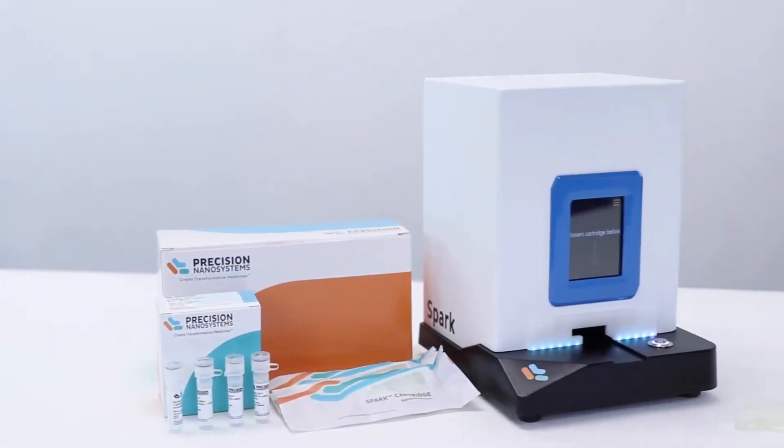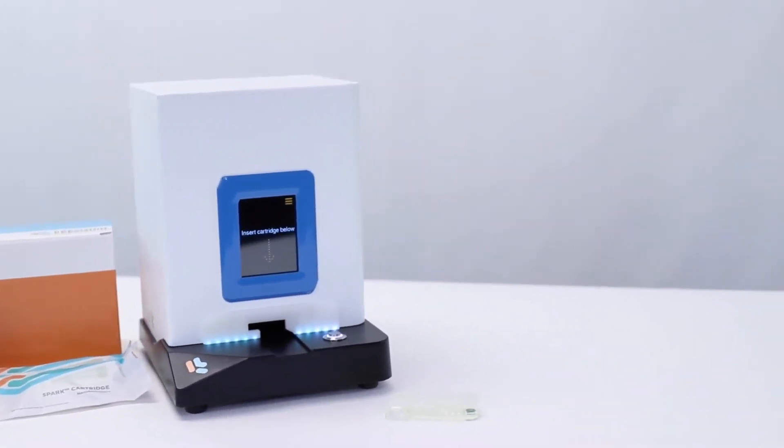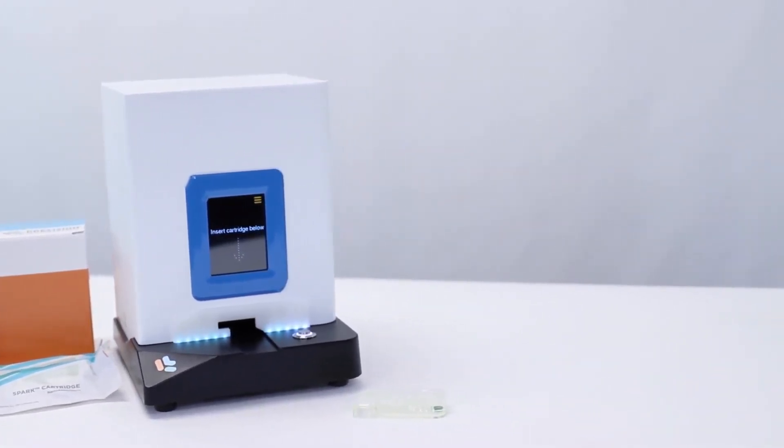In Kit Mode, inserting a cartridge associated with certain Spark kits will automatically select predetermined instrument settings appropriate for that kit.